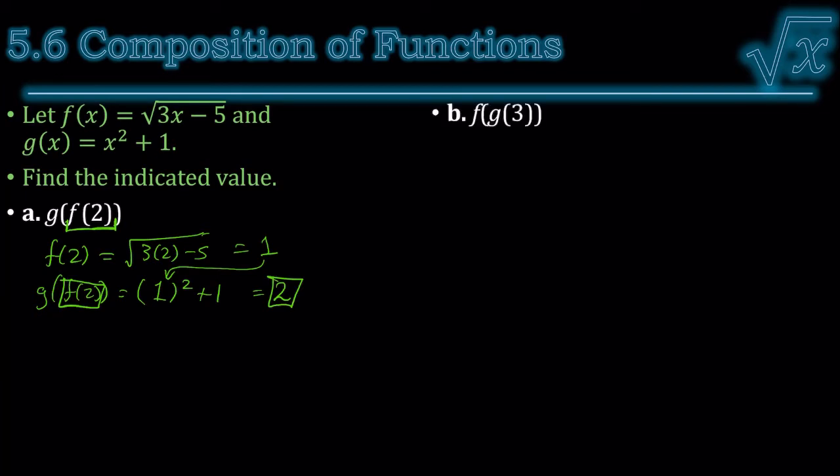Let's try another one. This time, the inside part is g. We have g of 3. So g of 3 is plugging in a 3 for function g. 3 squared is 9, plus 1 is 10.